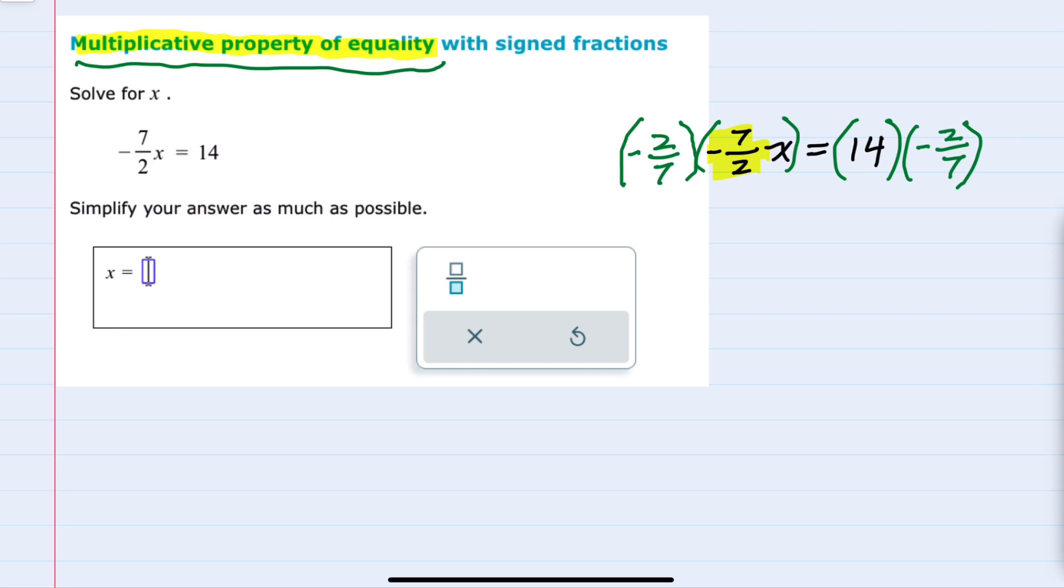The reason that we picked that reciprocal is because now on the left hand side, a negative times a negative is a positive. A 2 in the numerator and a 2 in the denominator cancel.